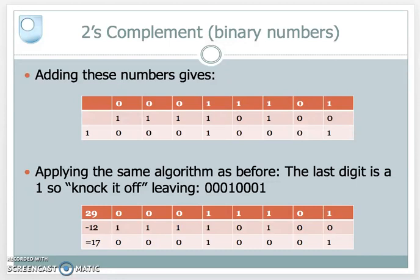Remember: 1 and 0 is 1, 0 and 0 is 0, and 1 and 1 is 0 carry 1. Look at the previous video where this is discussed. I apply the algorithm from before: if there's a 1 in the last column, remove it. There is, so we knock it off — leaving the answer 0 0 0 1 0 0 0 1 in binary, which represents 17. So 29 minus 12 gives us the answer 17.